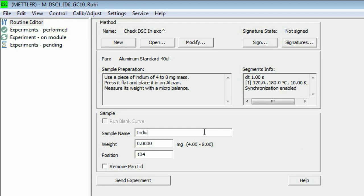A good name would be indium followed by the batch number used for the calibration. Enter the weight and enter the position number on the sample changer tray.